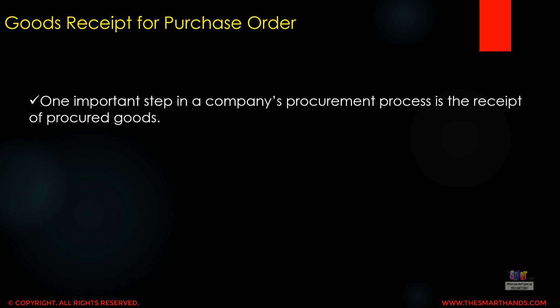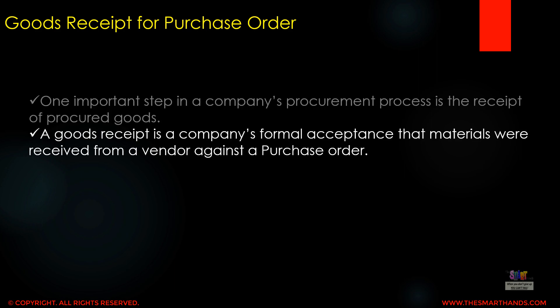Goods receipt is one of the important steps in a company's procurement process — it is the receipt of procured goods. Once we send a purchase order to our vendor and they send the goods to us, we are supposed to do the goods receipt in our system so the system can understand that we received the goods and update the stock. Goods receipt is a company's formal acceptance that materials were received from a vendor against the purchase order.